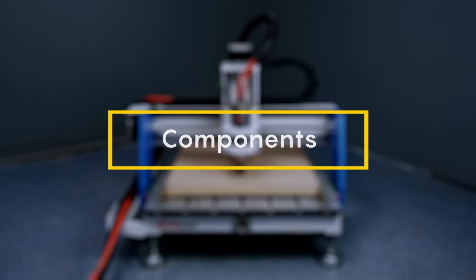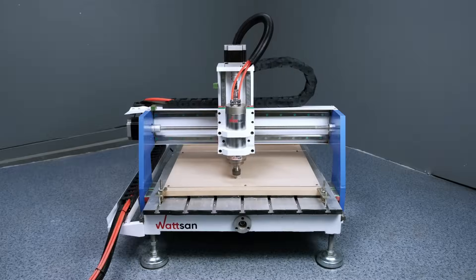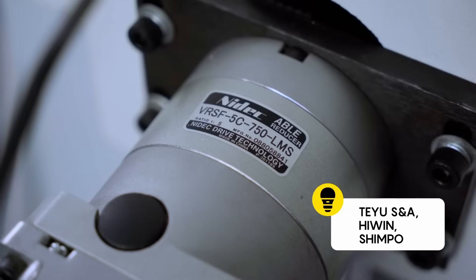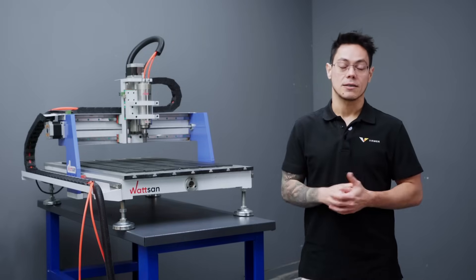Secondly, the components. Watson uses components from trusted brands just like Teju, SNA, Hewin and Shinpo for CNC routers. This ensures confidence in the reliability of Watson machines.